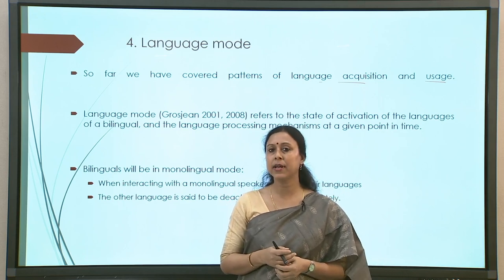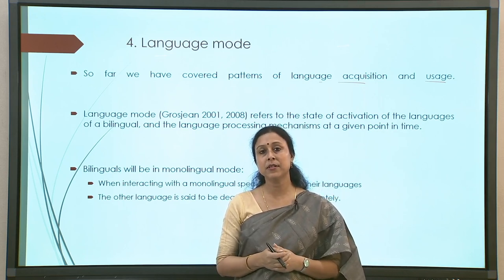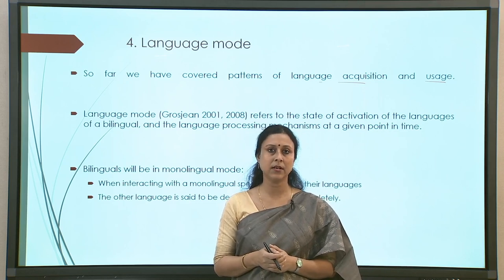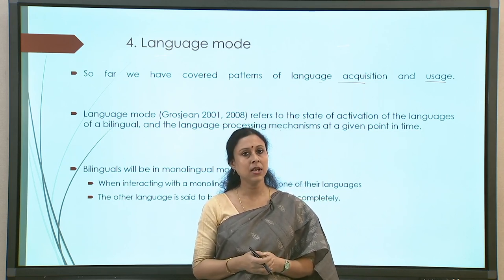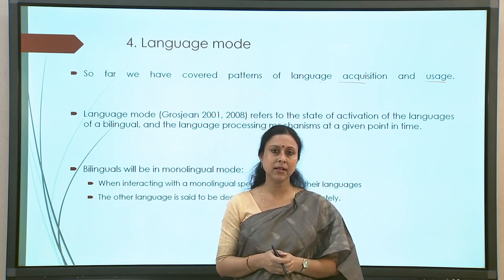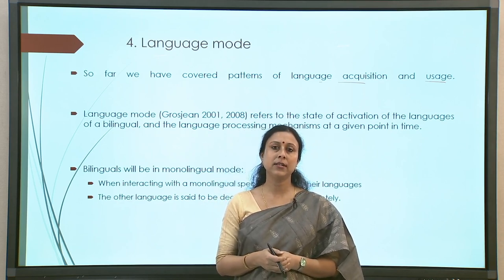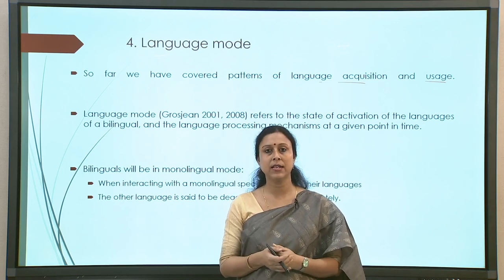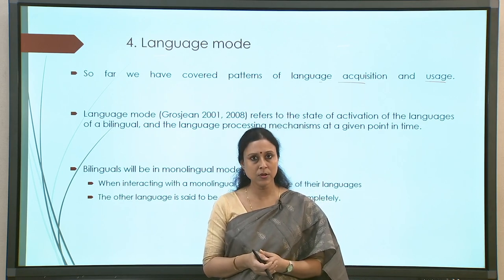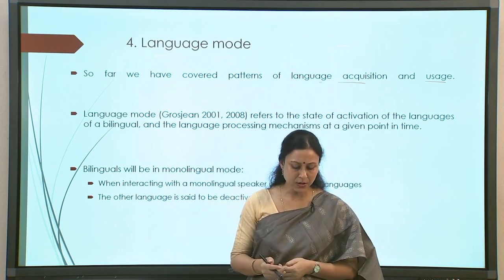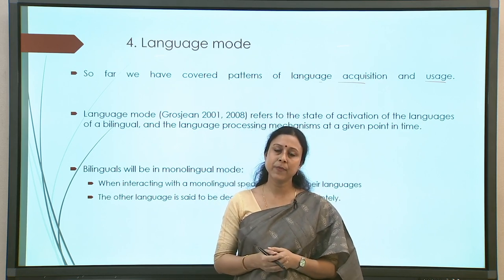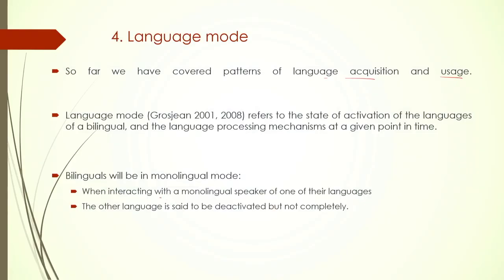The language processing mechanism, as per Grosjean's theory, will differ in terms of how active or inactive the non-target language is at the given point of time. Primarily, whether the participant is in a monolingual mode versus bilingual mode or in an intermediate mode, processing strategies will be different. A bilingual is said to be in a monolingual mode when interacting with a monolingual speaker in only one of their languages, and the same speaker could be in a bilingual mode when there is a bilingual speaker.